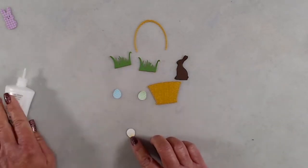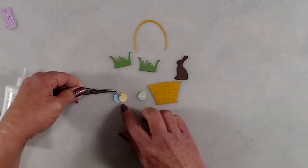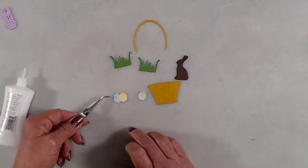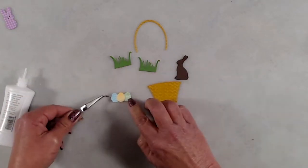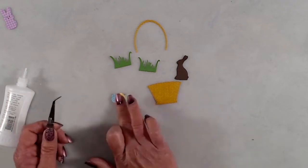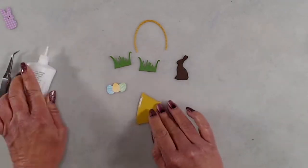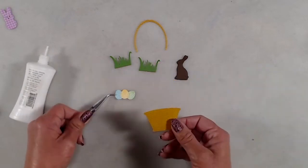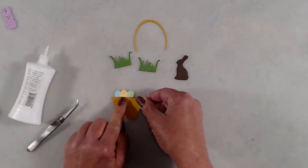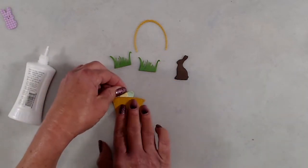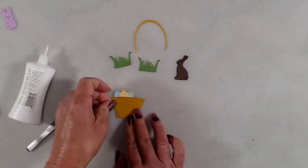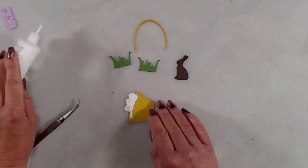I die cut a chocolate bunny and two little pieces of grass to put the goodies in the basket. I like to adhere smaller pieces together first, that way it's easier to manage and I can make sure that I have them in the order that I want. So I glued the Easter eggs together and then put a little bit of glue on the back side of the basket and pressed that on top of the Easter eggs. Then I added in my chocolate bunny and then I added the grass pieces behind that.